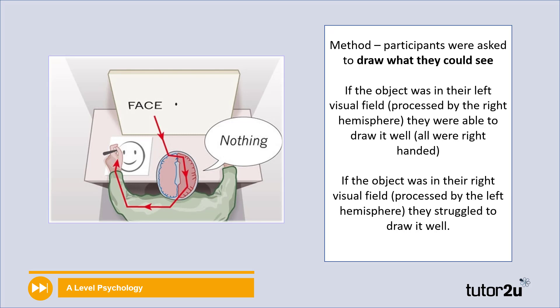Now, in a different part of the study, participants were asked to draw what they could see, just like we've got in the diagram on the screen. If the object was in their left visual field, and remember, this is processed by the right hemisphere, they were able to draw it well. It's worth mentioning that all the participants were right-handed, so that was eliminated as an extraneous variable.